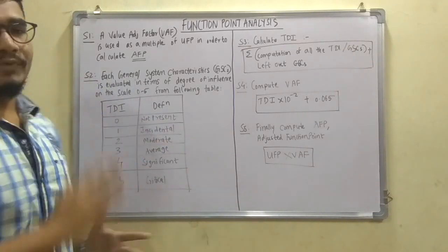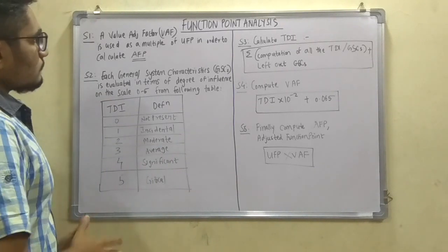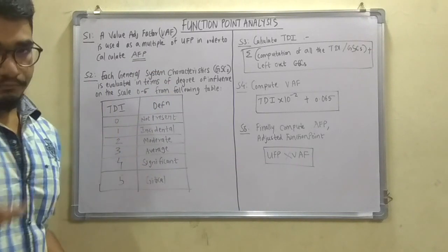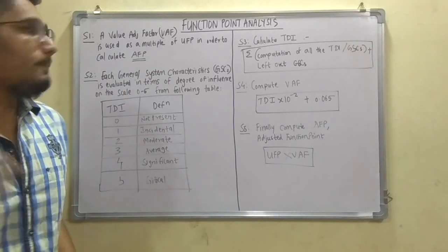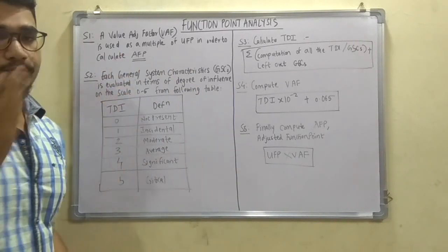So there are basically five steps for this. So let's get started. First of all, a value adjustment factor, that is VAF, is used as a multiple of UFP in order to calculate the AFP, that is the adjusted function point.